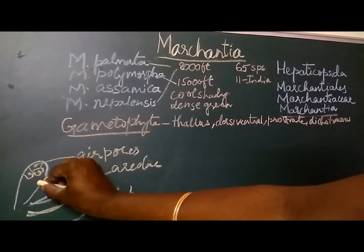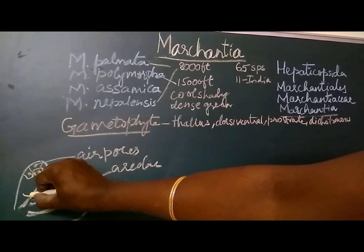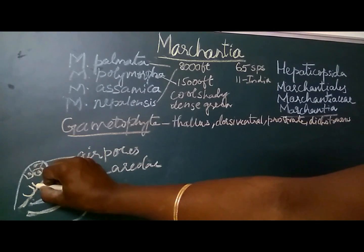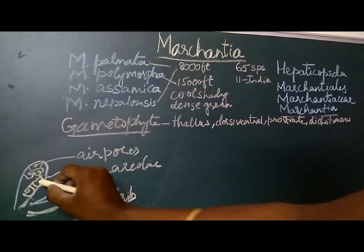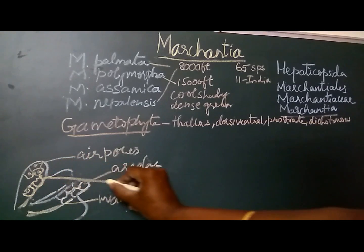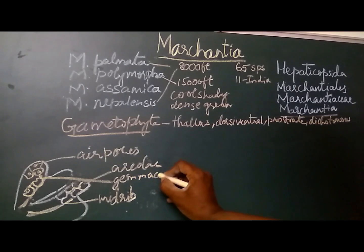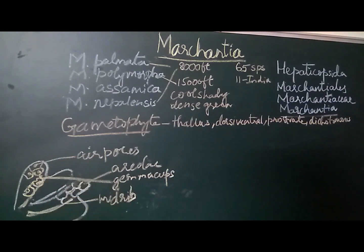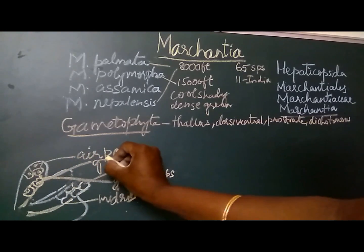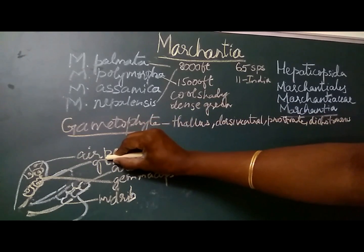On the midrib of the thallus, there are small cup-like structures present. These cup-like structures are called gemma cups. Inside the gemma cups, small globose bodies called gemmae are seen. Gemmae help in the vegetative propagation of the plant.